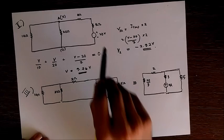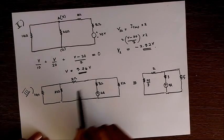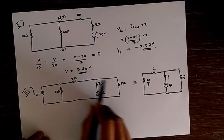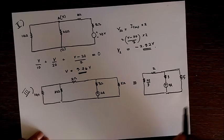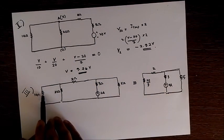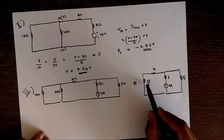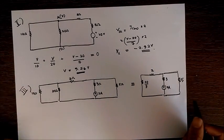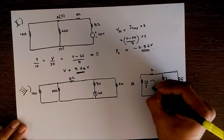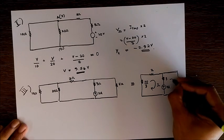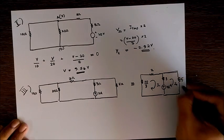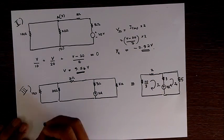For the 2 ampere current source, I deactivated or short-circuited the two voltage sources and the circuit acts like this. Now as the 10 ohm and 20 ohm are parallel, I grouped it as 20 by 3 ohm right here.